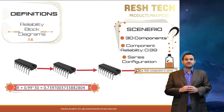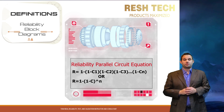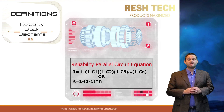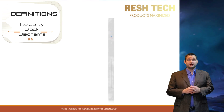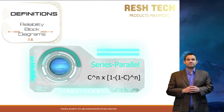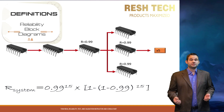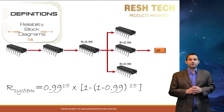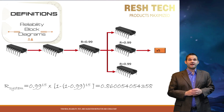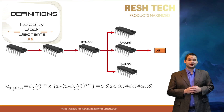Let's redesign the system assuming many of these components have the same function or can perform the same work of a neighboring failed component. We will make a parallel tree of three for every other three components. The reliability equation for a parallel circuit assumes all components are redundant. Series and parallel equations can be combined to calculate overall reliability. Using the same reliability values, the series-parallel circuit produces a reliability of 0.8600 — way better than the all-series configuration.